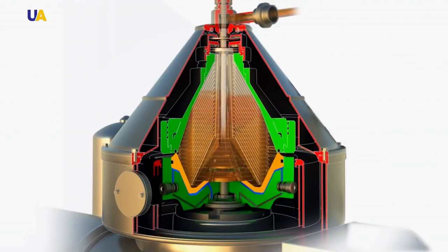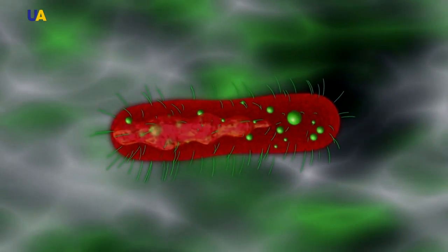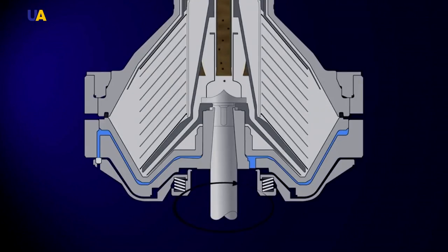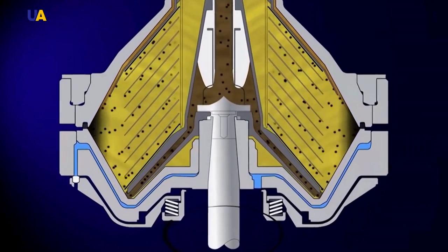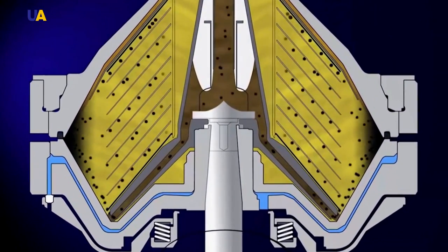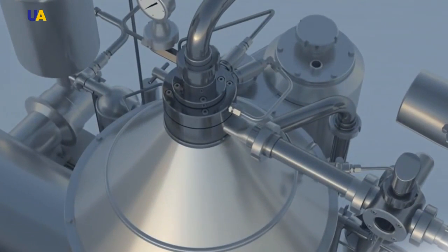Bactofugation is the removal of spore bacteria and microorganisms from milk. This process makes it possible to significantly improve the quality of raw materials used in the production of a cheese product of the highest quality.